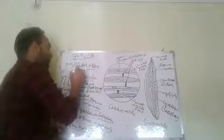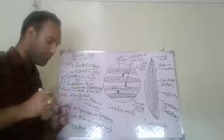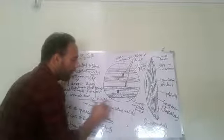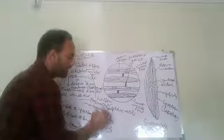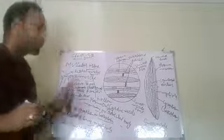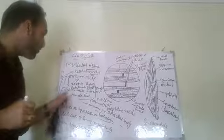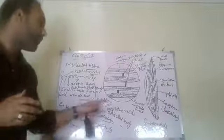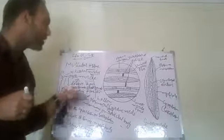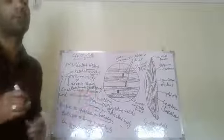Smooth muscles are also known as visceral muscles because they are present in the hollow or visceral organs of the human body. They are also called involuntary muscles because they work against the will of the organism, and unstriated muscles because their myofibrils do not show alternate light and dark bands.